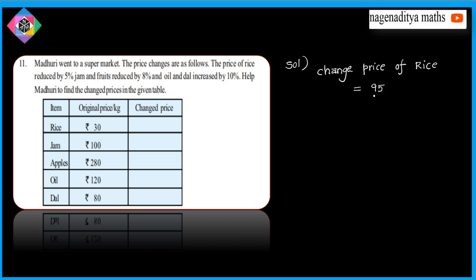So what is 95 rupees out of 100? The previous amount is 30 rupees. So we will start with the price of 30 rupees.